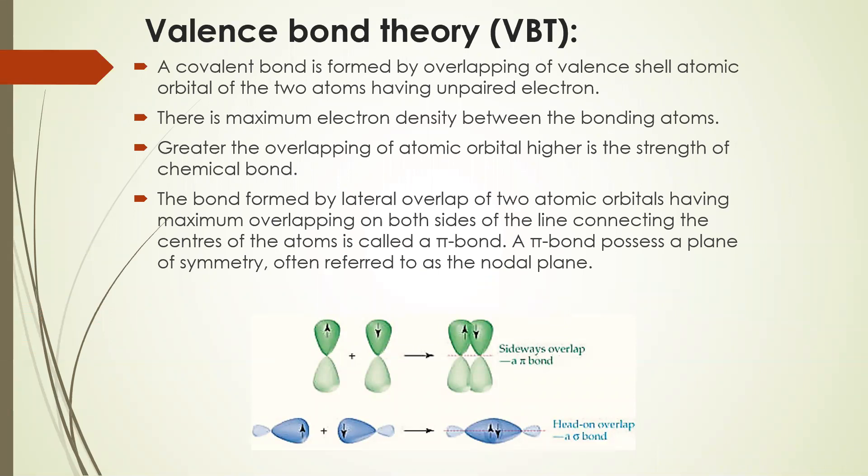Valence bond theory explains how a covalent bond is formed by overlapping of valence shell atomic orbitals of two atoms, leaving unpaired electrons. There is maximum electron density between the bonding atoms. Greater the overlapping of atomic orbitals, higher is the strength of the chemical bond. The bond formed by lateral overlap...